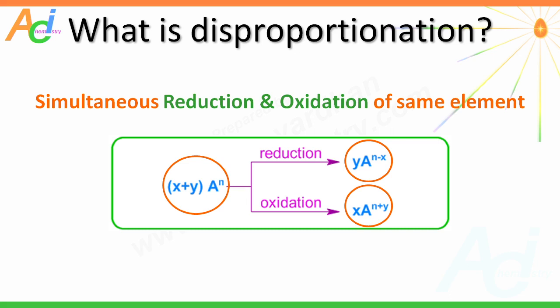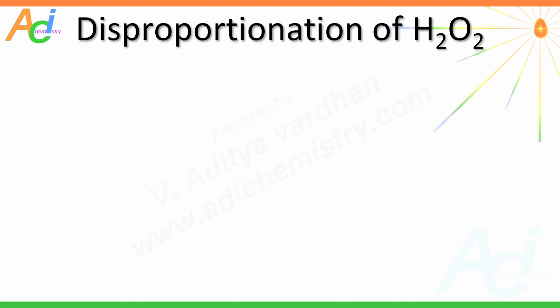Now you can see clearly what is going on in a disproportionation reaction. Atoms of the same element are undergoing reduction as well as oxidation simultaneously, from one oxidation number to two different oxidation numbers. Let us see one example of a disproportionation reaction.